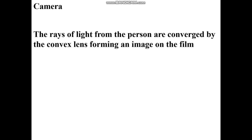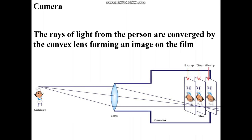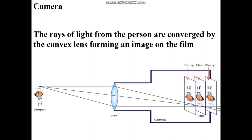Convex lens is also used in a camera. The rays of light from the person are converged by the convex lens, forming an image on the film. Here you can see an object in front of a convex lens and a real, inverted image is obtained. When you take a photograph, remember that when you stand beyond 2F, you get a real and inverted image of the object.